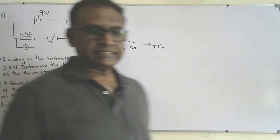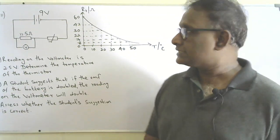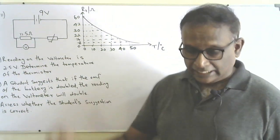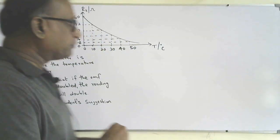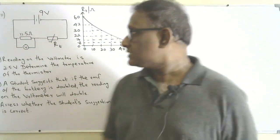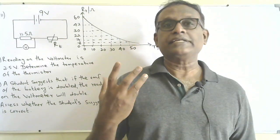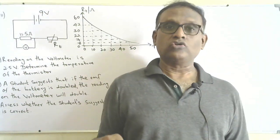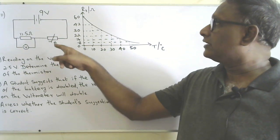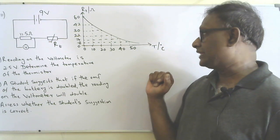This is the 11th question. A 9 volt ideal cell — nothing is mentioned about internal resistance — is connected to two components in series: a standard resistor of 11.5 ohm and a thermistor with resistance Rt. A voltmeter is connected across the standard resistor. For a thermistor, as temperature increases its resistance decreases — negative temperature coefficient.